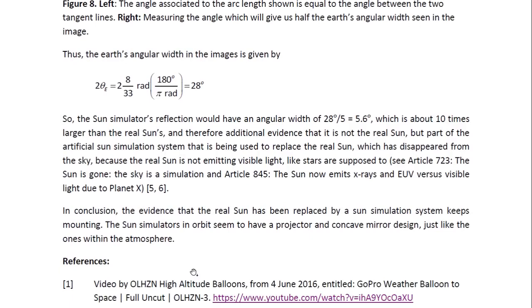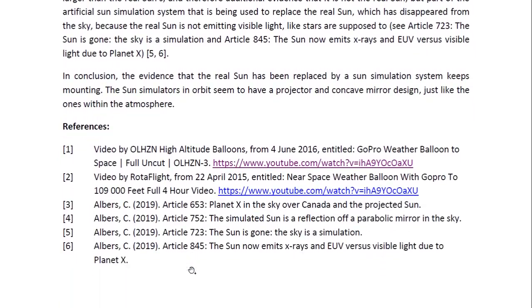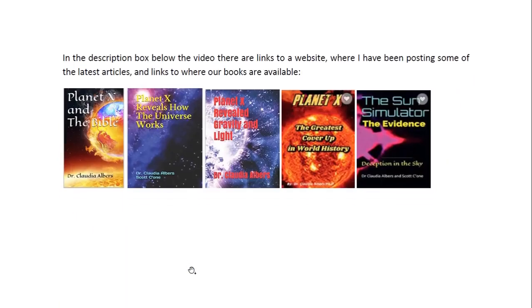So in conclusion, the evidence that the real Sun has been replaced by a Sun simulation system keeps mounting. The Sun simulators in orbit seem to have a projector and concave mirror design, just like the ones within the atmosphere. And these are the references. And in the description box below the video, there are all links to a website where I have been posting some of the latest articles and links to where our books are available. And here are some of them. This is Dr. Claudia Elbers, Planet X physicist. Thank you for watching.